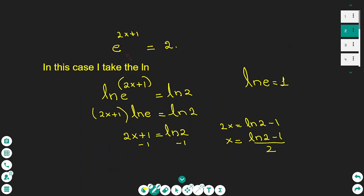Remember this technique: if the exponential function uses e and the unknown is a power, instead of log we take the natural logarithm ln, because ln(e) equals 1. So taking ln of e to the power of (2x + 1) equals ln 2, the (2x + 1) comes in front: (2x + 1) times ln(e) equals ln 2. Subtracting 1 and dividing by 2 gives x equals (ln 2 minus 1) over 2.